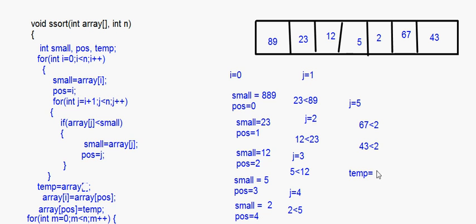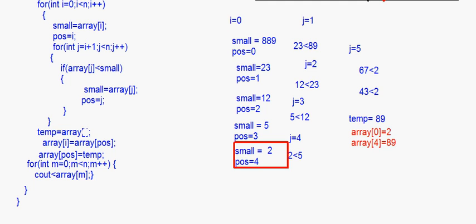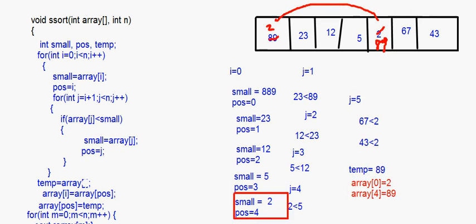Temp is equal to array[i]. Since i is 0, temp becomes equal to 89. Then array[i] — that is array[0] — is equal to array[pos], which is array[4], so array[0] becomes equal to 2. And array[pos] — array[4] — is equal to temp, which is 89. So basically 2 is coming to position 0 and 89 is going to position 4. Once this is done we display the array, then go back to the outer for loop where the values of i and j change.